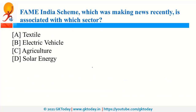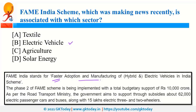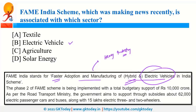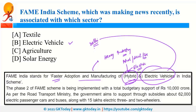FAME India Scheme — Faster Adoption and Manufacturing of Hybrid and Electric Vehicles in India — is related to the electric vehicle sector. The nodal ministry is the Ministry of Heavy Industry, with the objective of promoting electric and hybrid vehicles. Hybrid vehicles run on both conventional fuel (petrol, diesel, or gas) and battery/electric power. The Delhi government announced a policy called Switch Delhi for EV promotion. Phase 2 of the FAME scheme has a total budgetary allocation of 10,000 crore rupees and provides subsidies for electric vehicles.